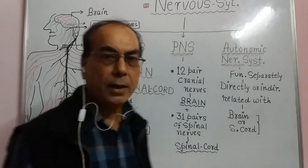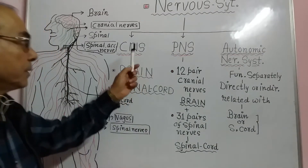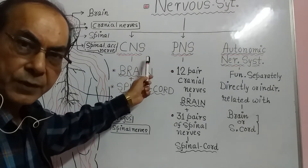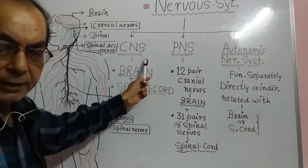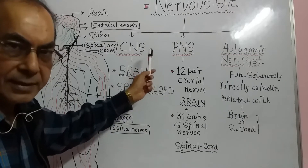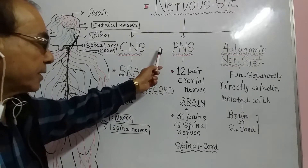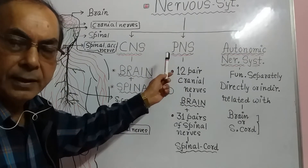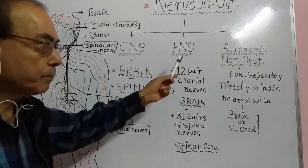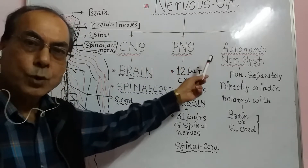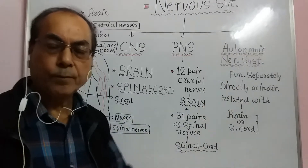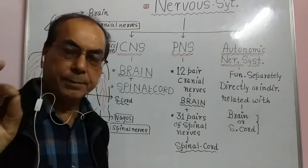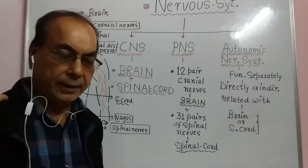What are these three important parts? The nervous system can be divided into three parts. Number one is the CNS, which means the Central Nervous System. The second part is the PNS, which means the Peripheral Nervous System. The third part is the Autonomic Nervous System.